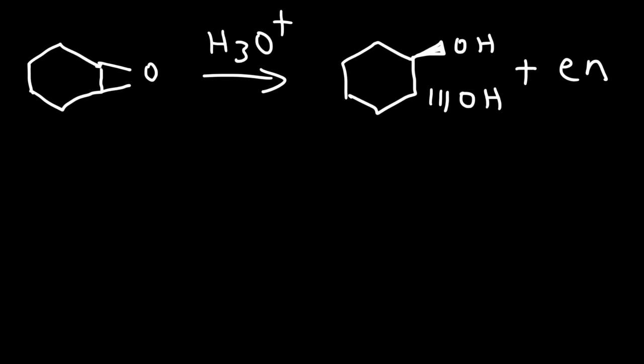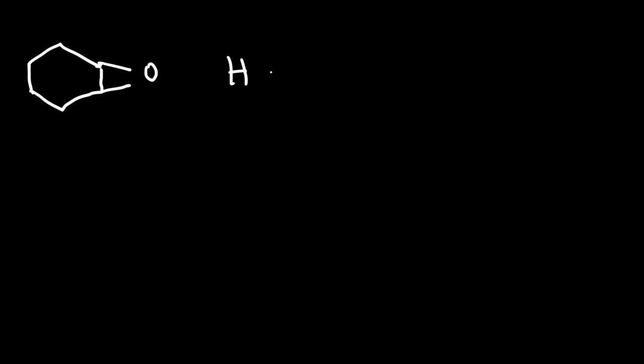So let's go over the mechanism for that reaction. I'm going to redraw H2O+ like this. So the oxygen of the epoxide is going to be protonated. It's going to grab a hydrogen from H2O+. Now once it gets that hydrogen, now the ring is ready to be open.